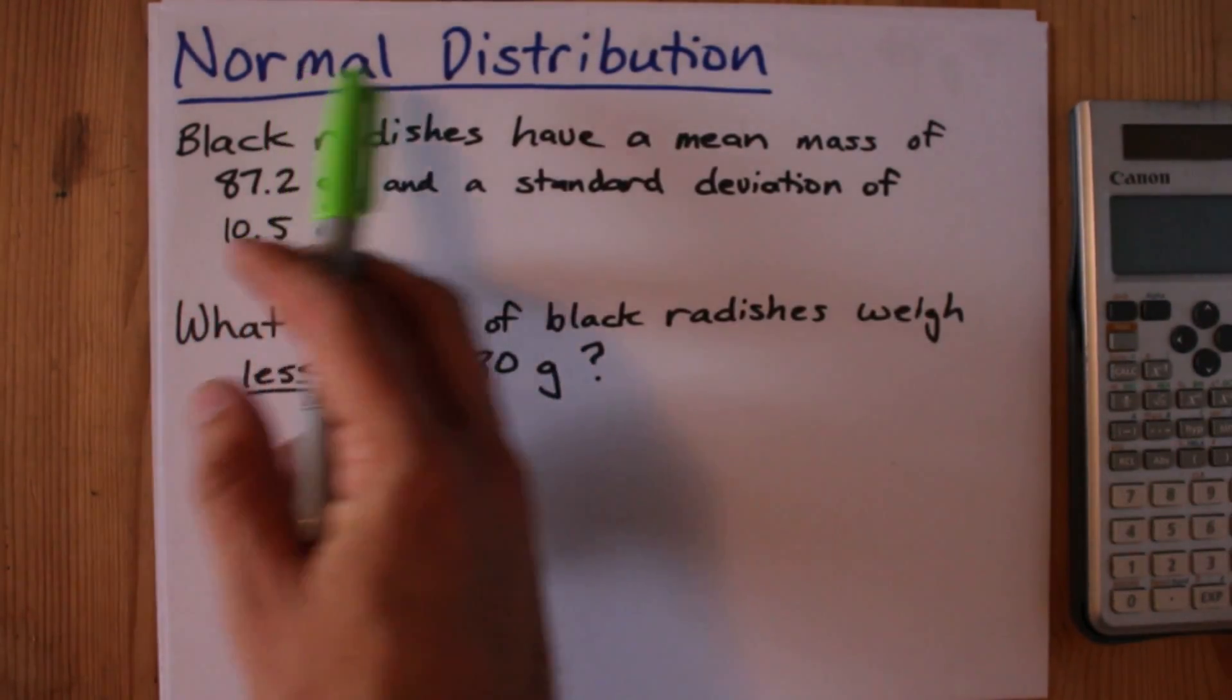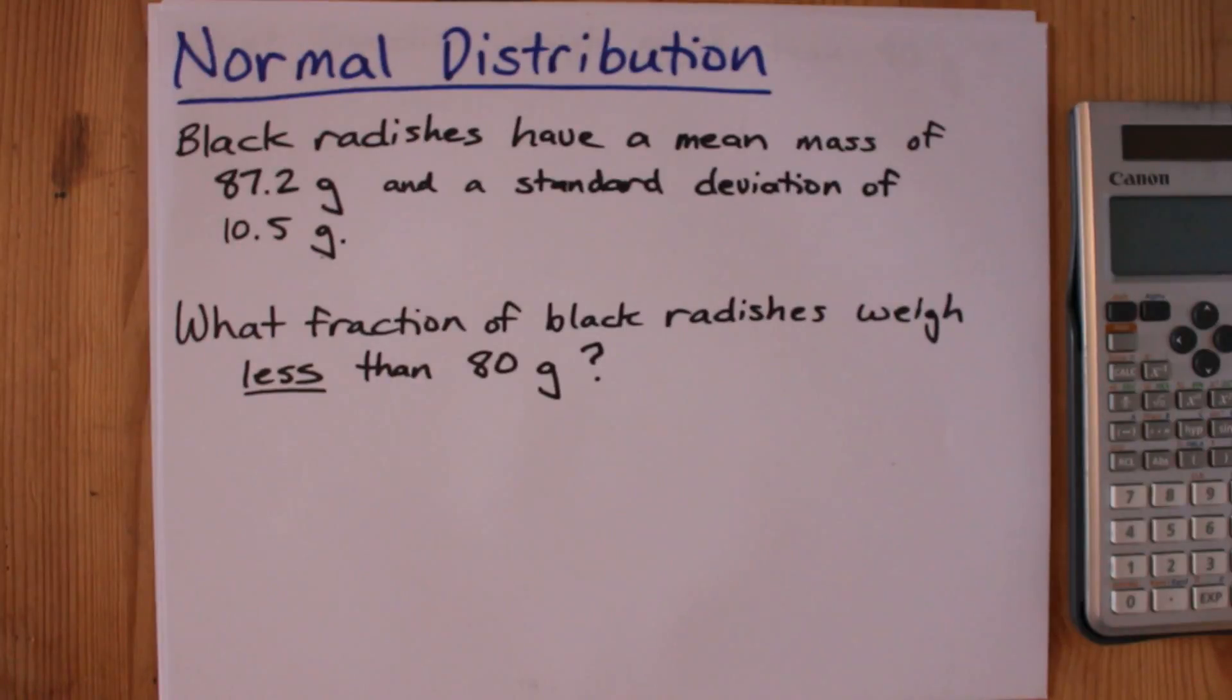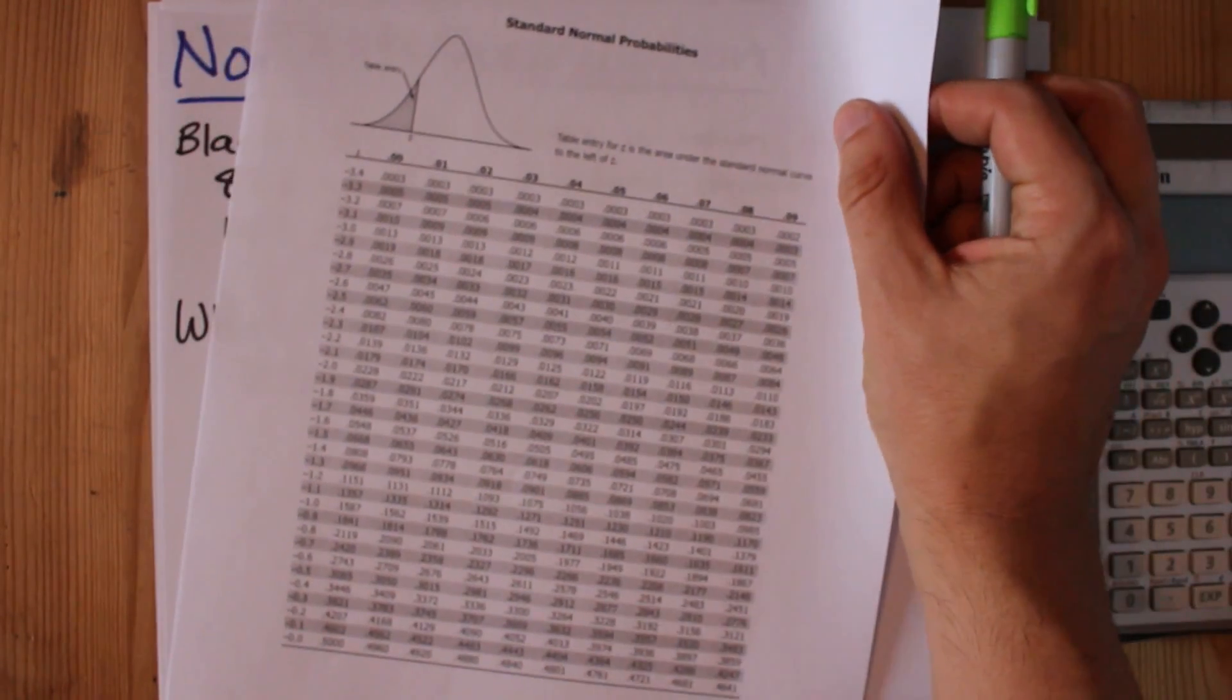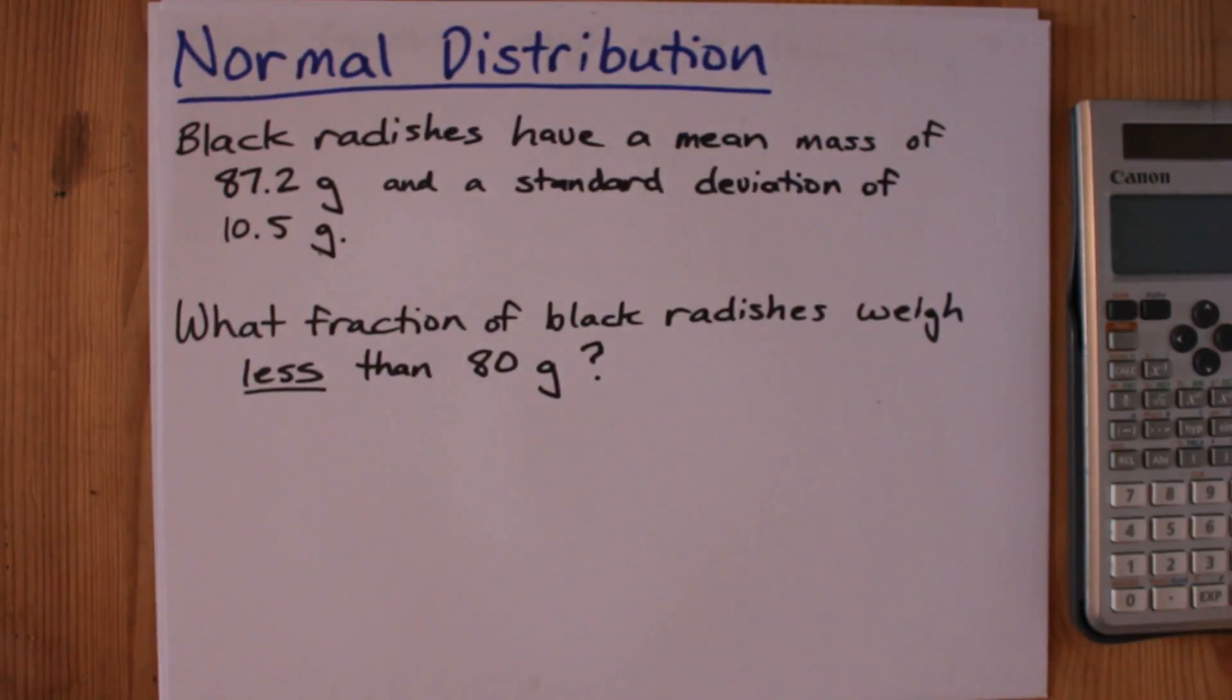Alright, we're going to do some questions about the normal distribution, which are much easier than they look as long as you know how to use a z-score table.